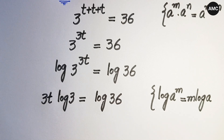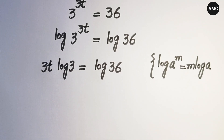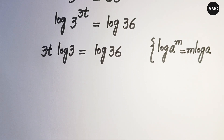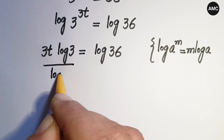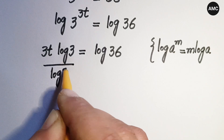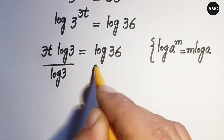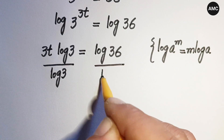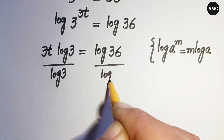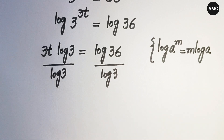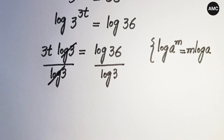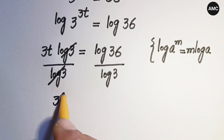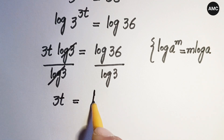Now dividing both sides by log 3, the log 3 on the left cancels, giving us 3t is equal to log 36 over log 3.